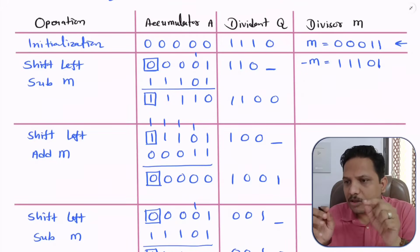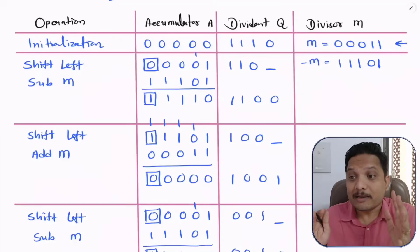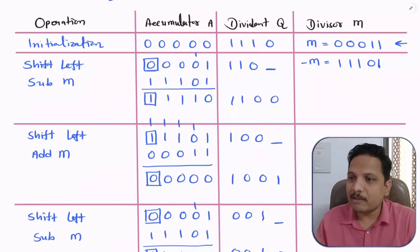At the last step, check the sign: if it is 1, perform restore operation (add M); if it is 0, the answer is remainder = A and quotient = Q. Remember, in non-restoring division we only do restore operation in the last step if the sign is negative. In restoring division, by contrast, we check whether to restore at every step.